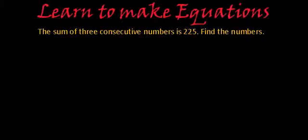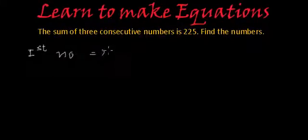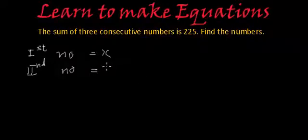So they are saying sum of three consecutive numbers is 225. If we assume that the first number of those three consecutive numbers is x, what will be the second number? The second number will be x plus 1.